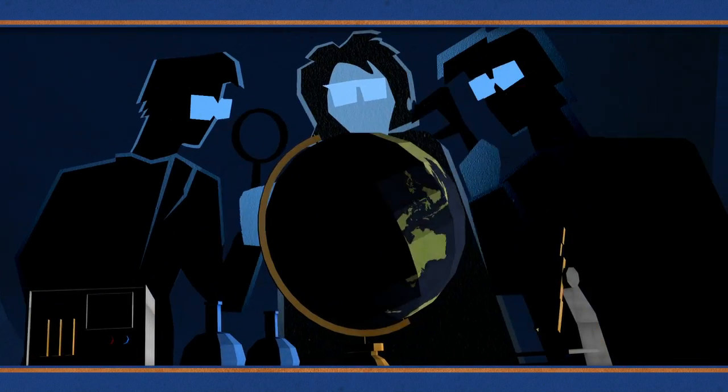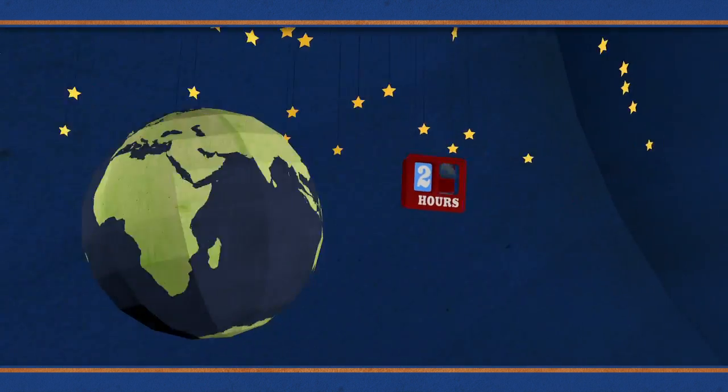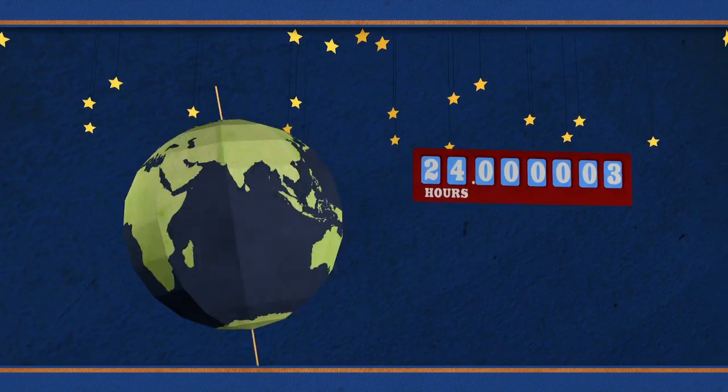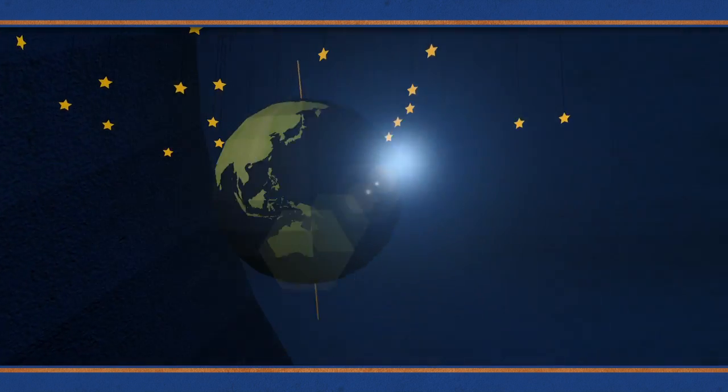But scientists who like to find out exactly what's going on know the ground actually moves around quite a bit. Days are never quite 24 hours, and the Earth actually wobbles on its axis in a very particular way as it revolves around the sun.